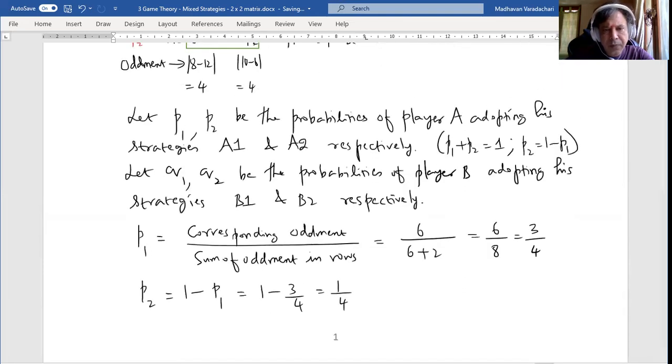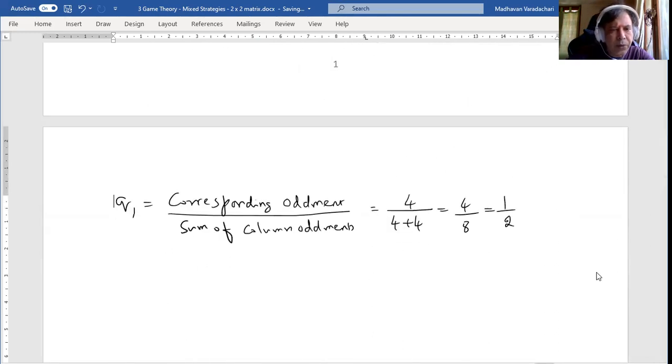Same way here also since Q1 and Q2 are the only two probabilities for player B, sum of those two probabilities should be 1. That means Q2 should be 1 minus Q1, which is 1 minus 1 by 2 which is again 1 by 2.